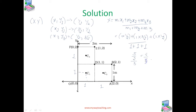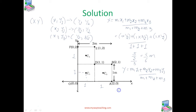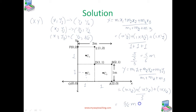We get X = 5/6 meters. Similarly, for Y: (M1·Y1 + M2·Y2 + M3·Y3) / (M1 + M2 + M3). M1=1 and Y1=1/2, M2=1 and Y2=1/2, M3=1 and Y3=3/2, divided by 3. Simplifying this, we get Y = 5/6 meters as well.